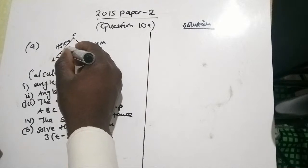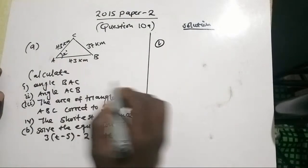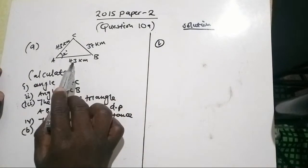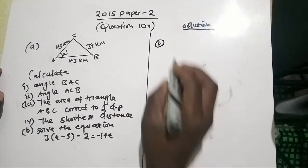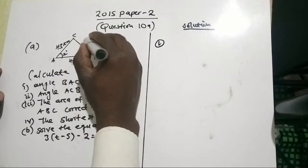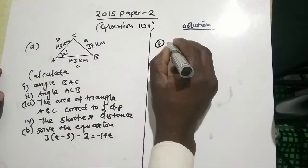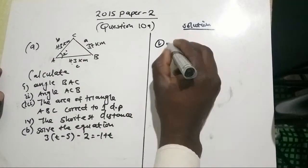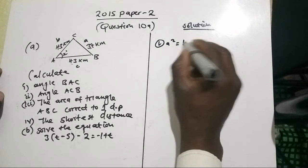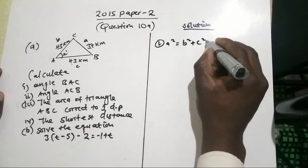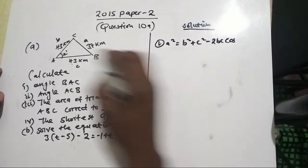For question number 1, we are asked to calculate angle BAC — let's call this angle x. We are given all three sides, so we are going to use trigonometry, specifically the cosine law. We start with: a² = b² + c² − 2bc·cos(A), where A is the angle we are looking for.